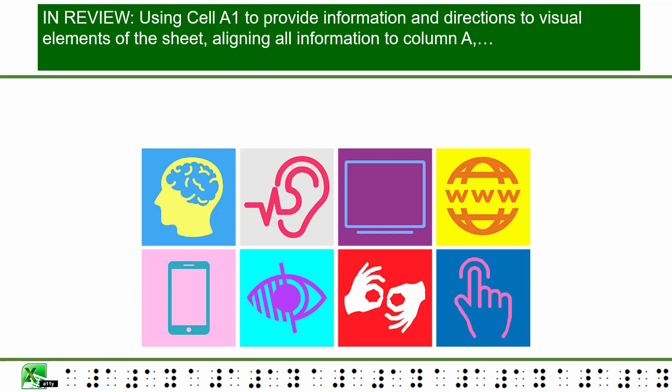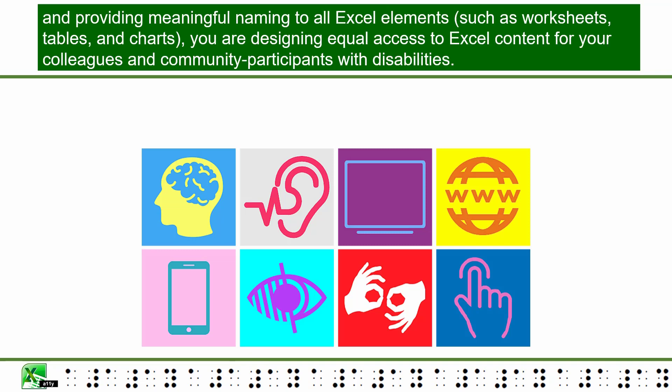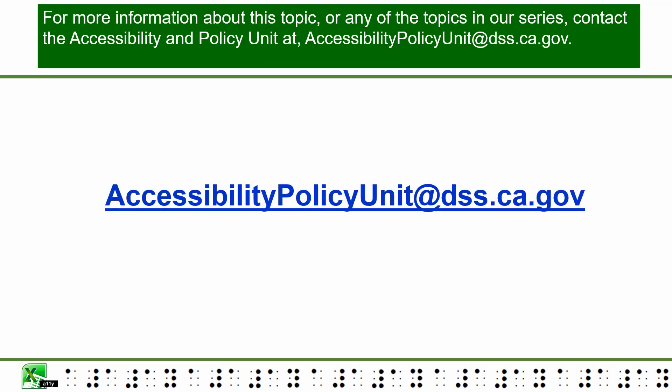In review: using cell A1 to provide information and directions to visual elements of the sheet, aligning all information to column A, and providing meaningful naming to all Excel elements such as worksheets, tables, and charts — you are designing equal access to Excel content for your colleagues and community participants with disabilities. For more information about this topic or any of the topics in our series, contact the Accessibility and Policy Unit at accessibilitypolicyunit@dss.ca.gov.